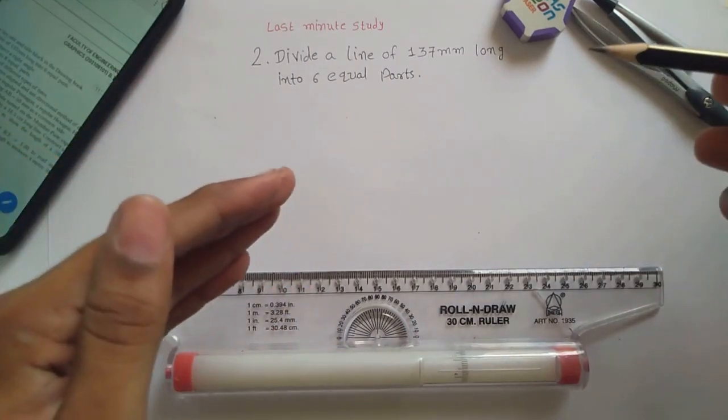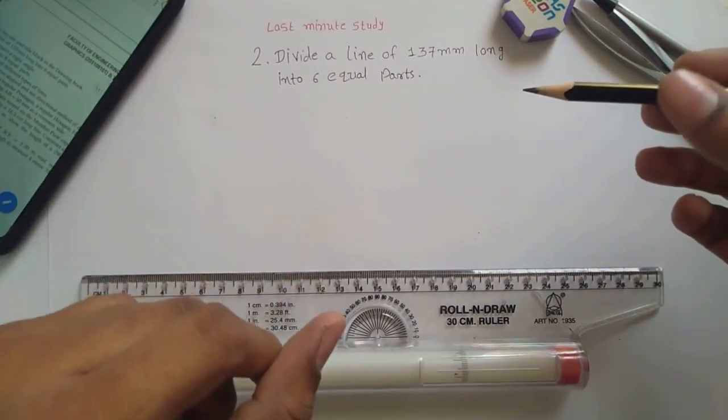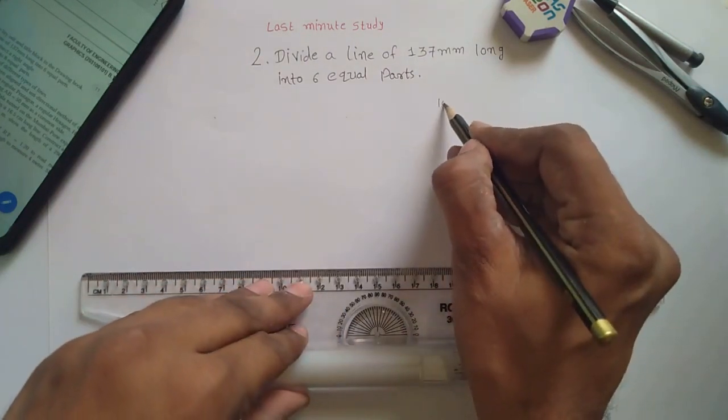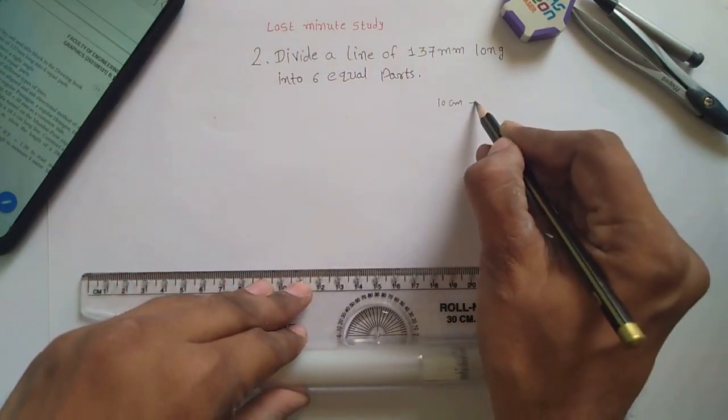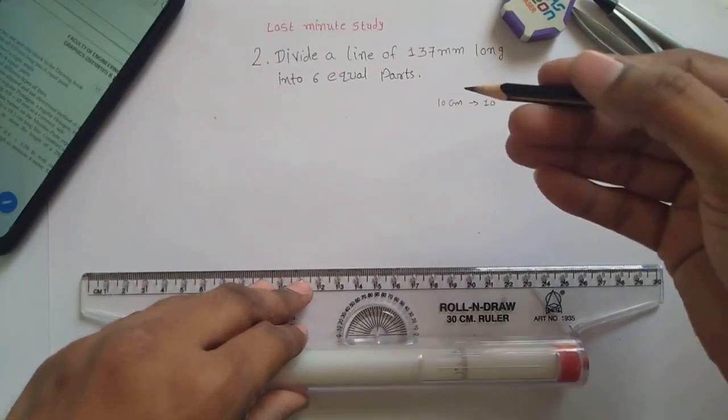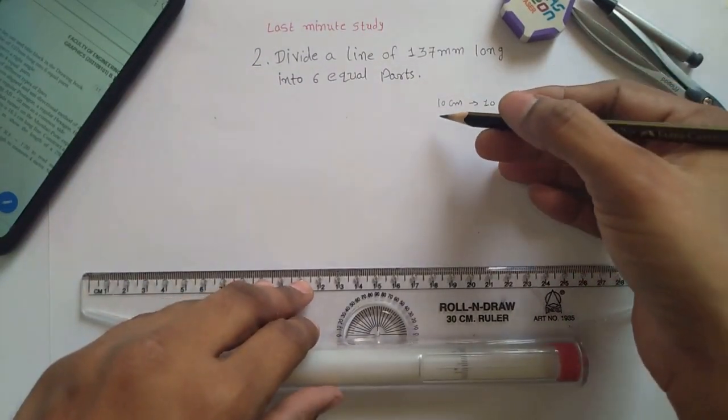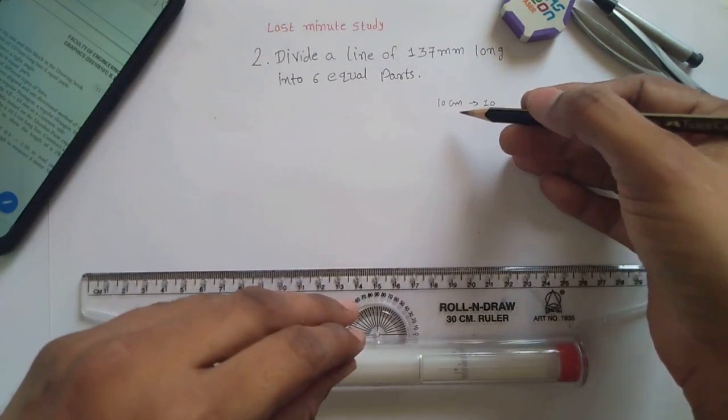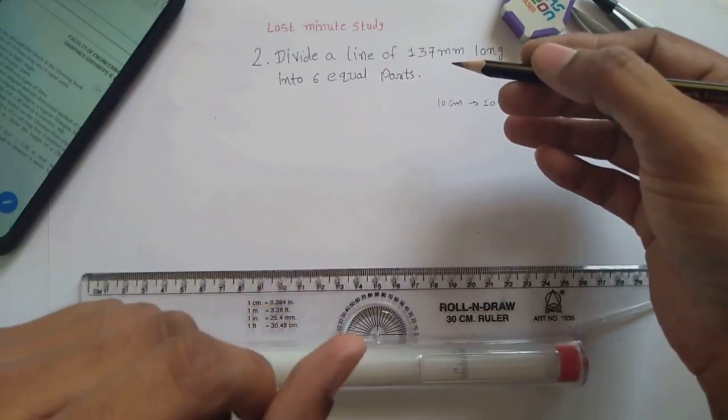To divide any line, let's say 10 centimeter long line, into 10 equal parts it's very easy to divide 1 centimeter each. But if I ask you to divide 10 centimeter long line into 9 equal parts it's difficult. So you can divide but there are decimal points involved, so we cannot measure a decimal by using a normal roller scale or any scales.